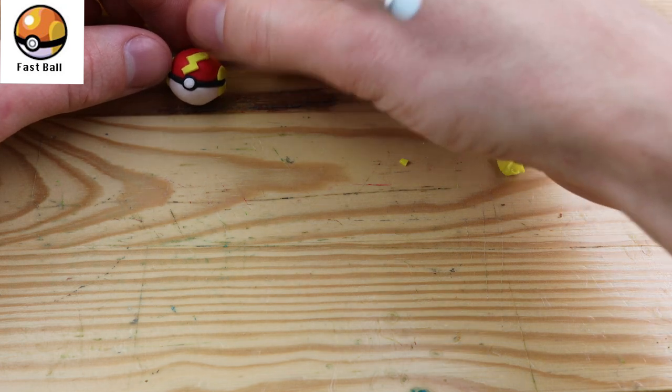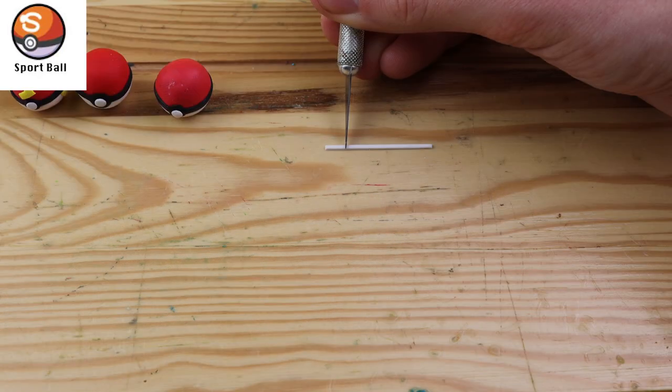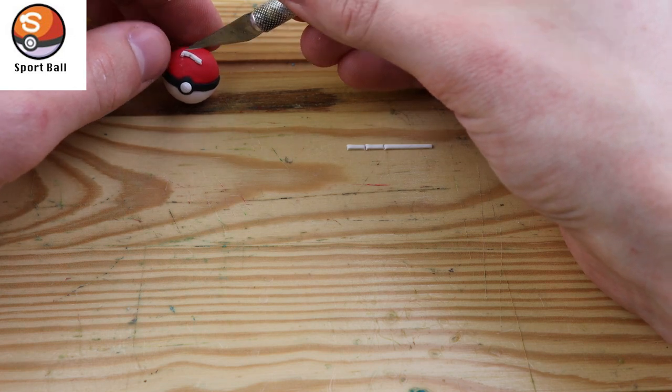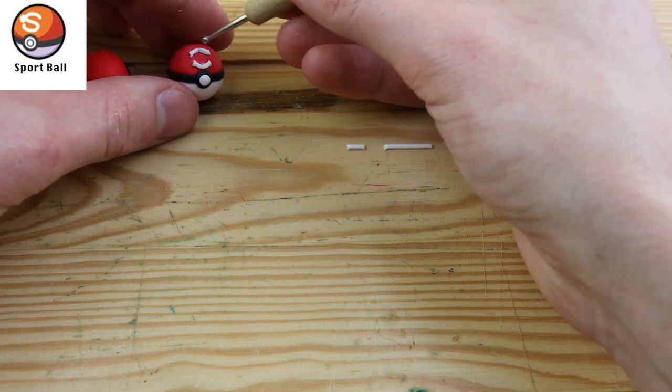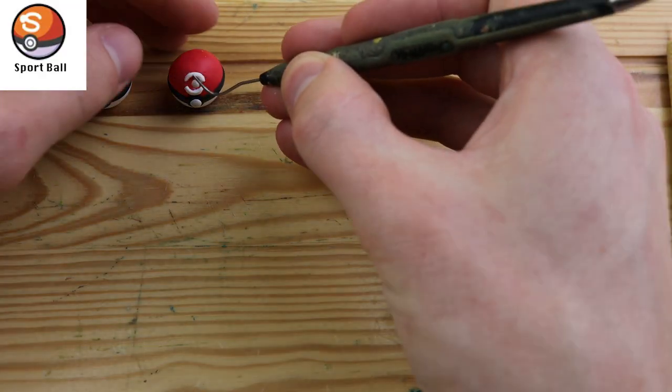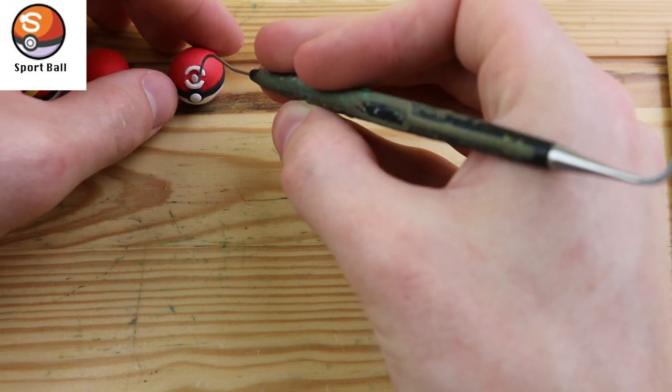As I create the pokeballs, I'll have a picture of them along with the name on the screen, so you can sort of follow with me if you don't really know the names of the pokeballs I'm creating. This pokeball is called the sport ball, and what makes this one special is it's the only pokeball you can use in the bug catching contest.